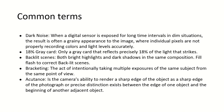Bracketing: intentionally taking multiple exposures of the same subject from the same point of view in order to get one good one from the multiple ones. As in the case of wedding photography, the photographer will take multiple photos with dark exposure, light exposure, normal exposure, etc. Accutance is the camera's ability to show a sharp edge of the object as a sharp edge in the image.